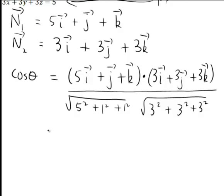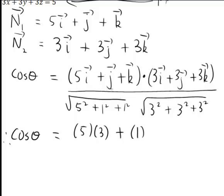Let's remember how we work out the scalar product. It becomes the coefficients of i multiplied together, so 5 times 3, plus the coefficients of j multiplied together, so 1 times 3, plus the coefficients of k multiplied together, so 1 times 3.